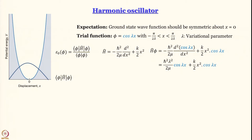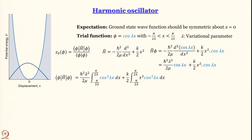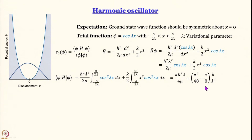We have to evaluate this integral — I am not going to do it step by step because it is very long. I encourage you to try and do it yourself. The answer you get is: π ℏ² λ / 4μ + (π³/48 - π/8) · k/λ³. Of course you can simplify it further, bringing it to one numerator and denominator, but we will not do that here.